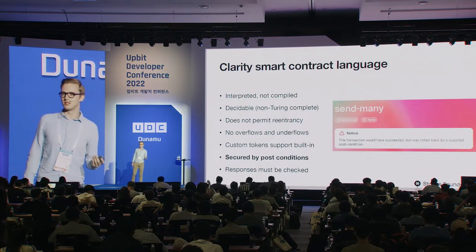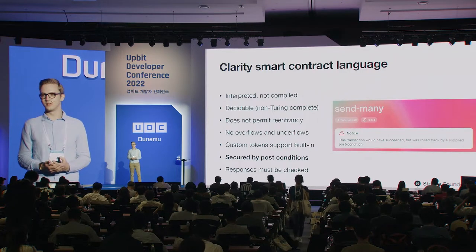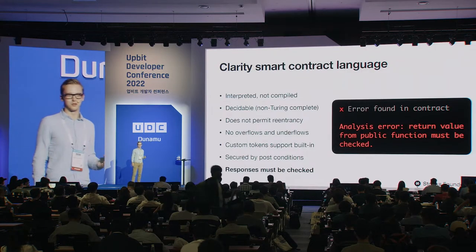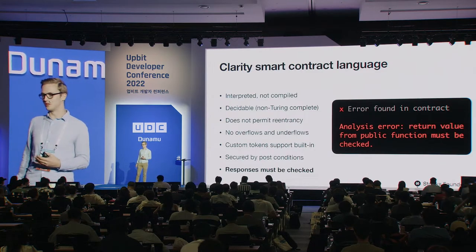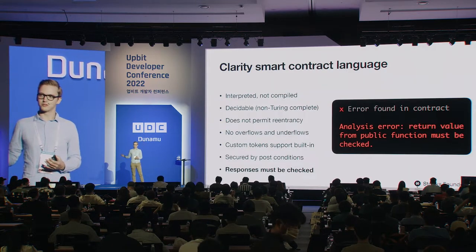Post conditions are assertions that happen after the entire transaction completes. If these assertions fail, the whole transaction is rolled back, giving you an additional form of security. Another important property for smart contract developers: every response in a Clarity call must be checked. If a contract calls into another contract, you must handle the return value — you cannot ignore it. If the called contract errors out and you don't handle that, the transaction will roll back.